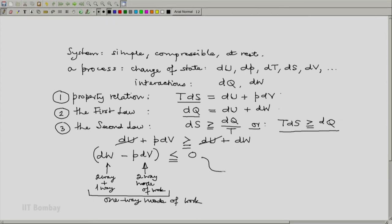And that means what we have been able to derive from a combination of first law, the second law, and the property relation is that work done by a one-way mode of work will always be negative by our sign convention, or at most equal to 0, which is a trivial case. And that means a one-way mode of work will be such that the work will be done only on the system. The system by itself will not be able to do any one-way mode of work.